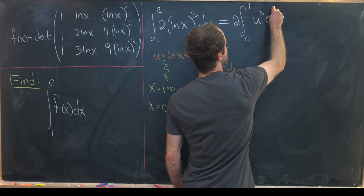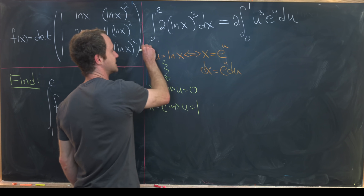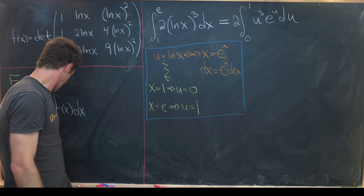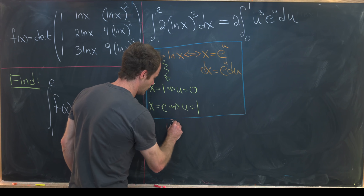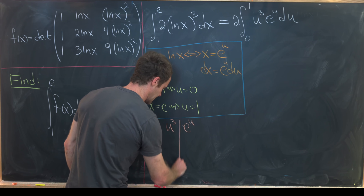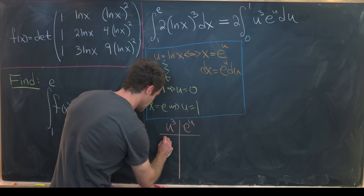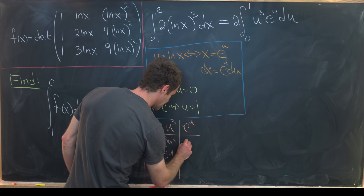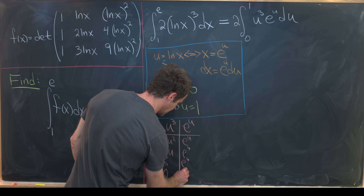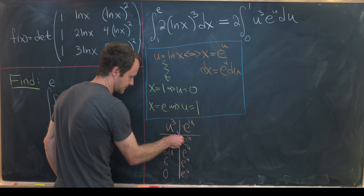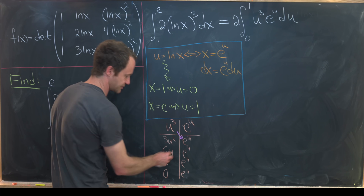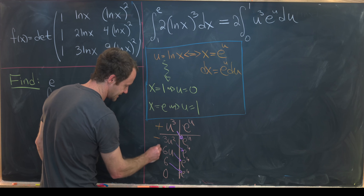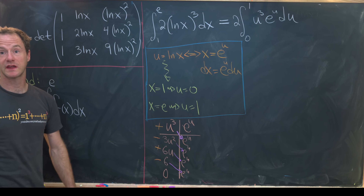This is a classic integration by parts problem, solved using tabular integration. Place the polynomial part u³ in the left column and the exponential eᵘ in the right. Differentiate down the left — 3u², 6u, 6, 0 — and take antiderivatives down the right — eᵘ repeated. Match on the diagonal and alternate signs: plus, minus, plus, minus.